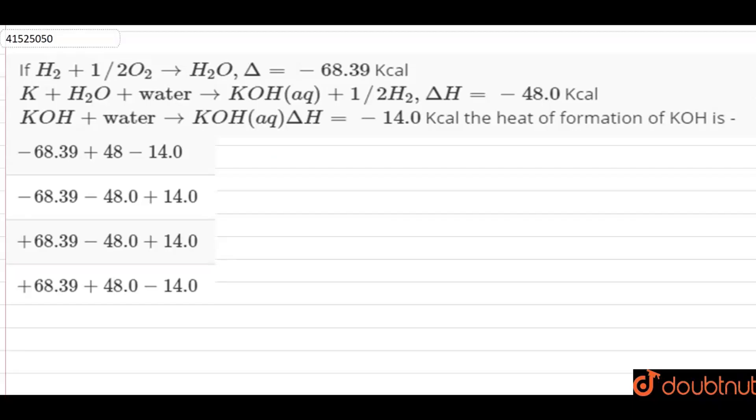Hi guys, so now we have a question. If H2 plus half O2 gives H2O, delta H is minus 68.39 kcal. And K plus H2O plus water gives KOH aqueous plus half H2. Delta H for this equation is minus 48.